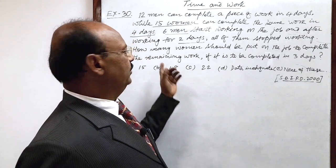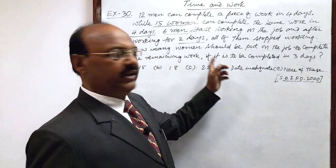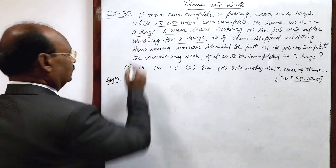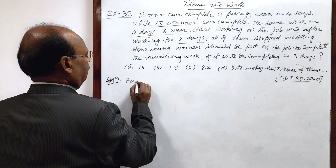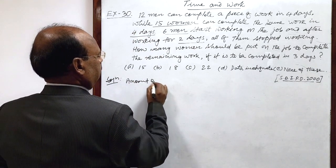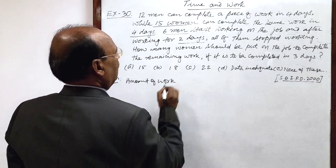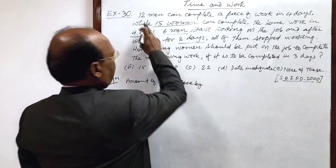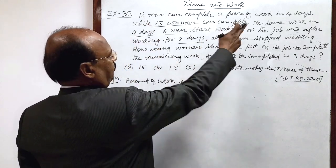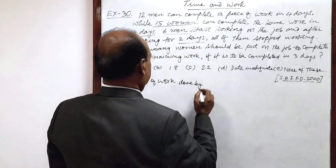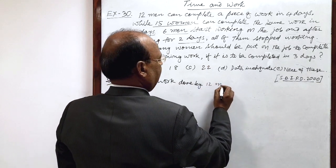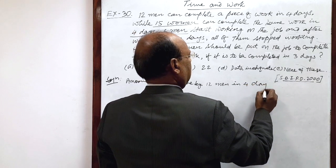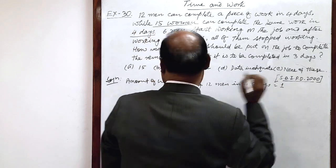The amount of work done by 12 men in 4 days is 1. 12 men in 4 days equals 1 complete work.